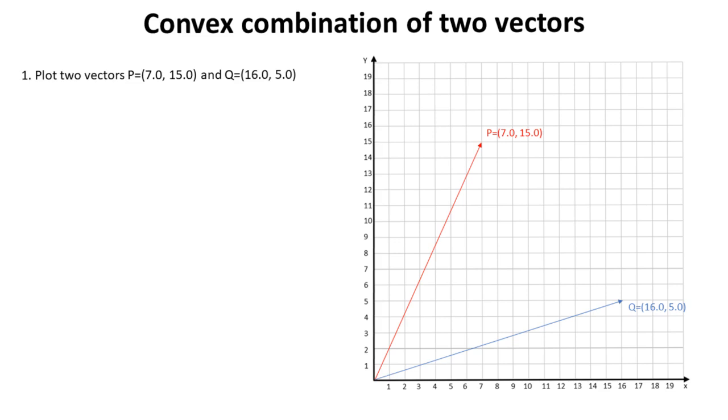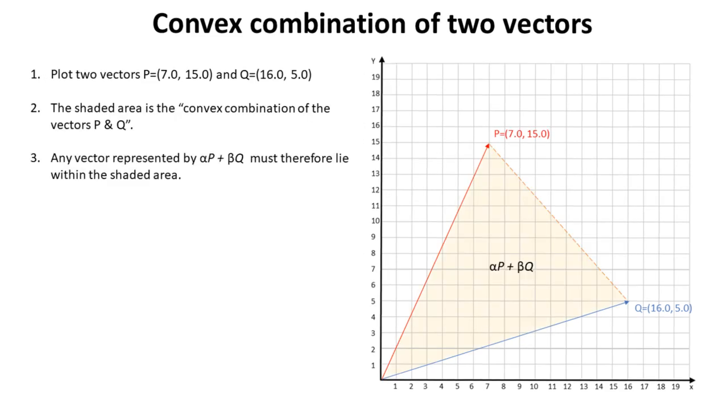Let's start by plotting two vectors out into our graph, P at 7,15 and Q at 16,5. The shaded area here is the convex combination of the vectors P and Q. Any vector represented by this expression must therefore lie within this shaded area.